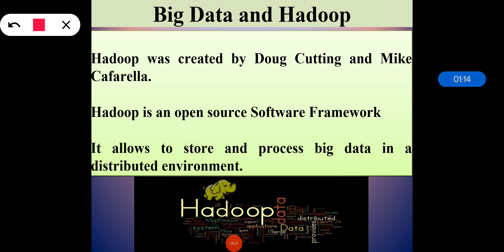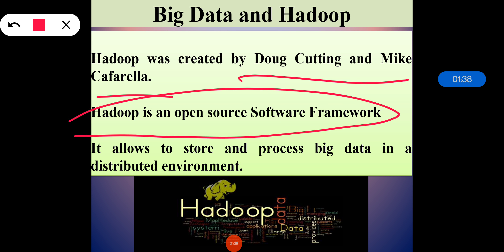Hadoop was created by Doug Cutting and Mike Cafarella in 2005. The name is actually defined by the inventor's son's toy elephant. It was originally developed to support the distribution for the search engine project. Hadoop is an open source software framework and Doug named it after his son's toy elephant. Apache Hadoop is a registered trademark of the Apache Software Foundation.